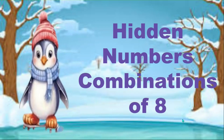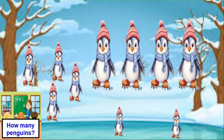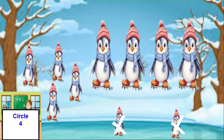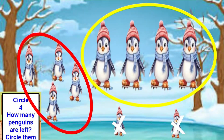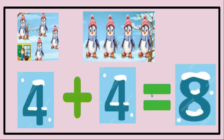This fluency is called Hidden Numbers: Combinations of Eight. How many penguins do you see? Cross out two penguins. Now circle four penguins. How many penguins are left? Circle them. How many penguins did you circle in all? Four and four is how many penguins in all? Four and four is eight.